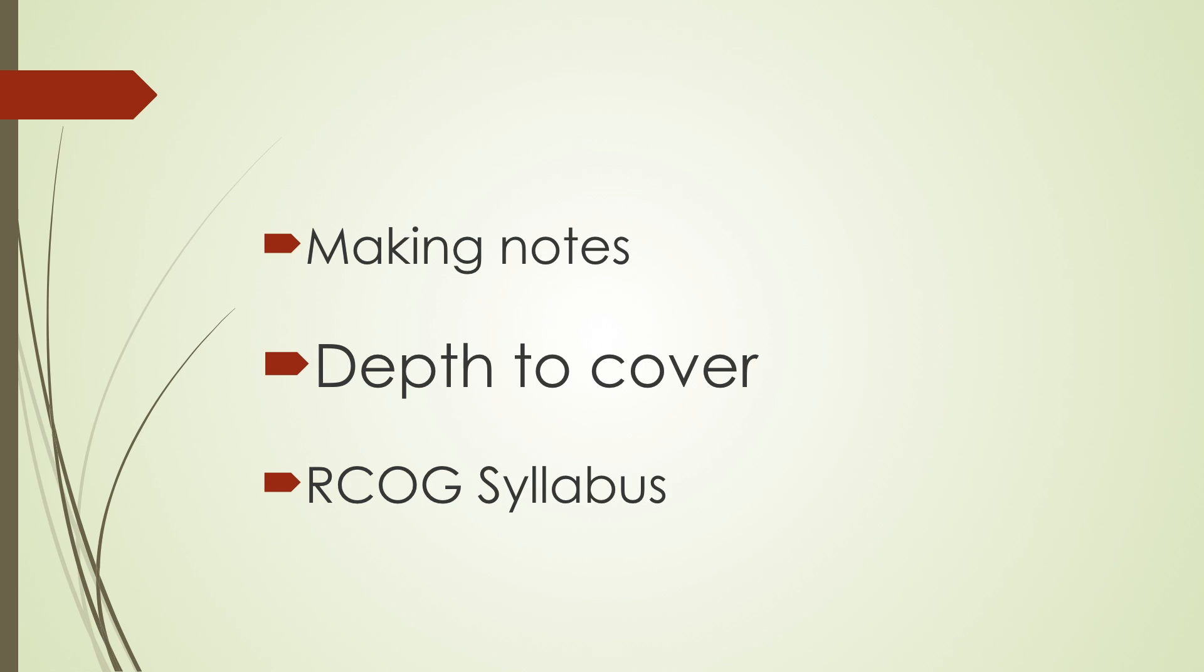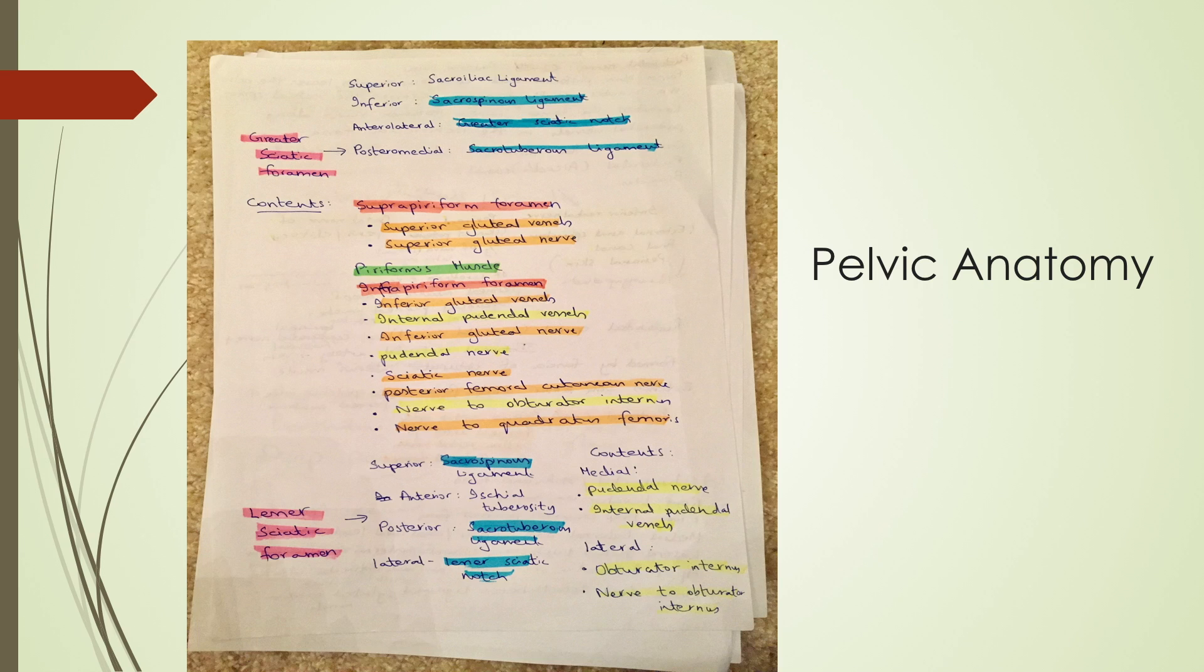This is the first slide of an example from some of the revision notes that I made. In this particular slide, I'm sharing with you some of the pelvic anatomy. You can see that I always use A4 size sheets. I don't like lined paper in particular because if you want to make diagrams and little maps, it's easier to have a plain A4 paper so you can work around and use every corner to the best.